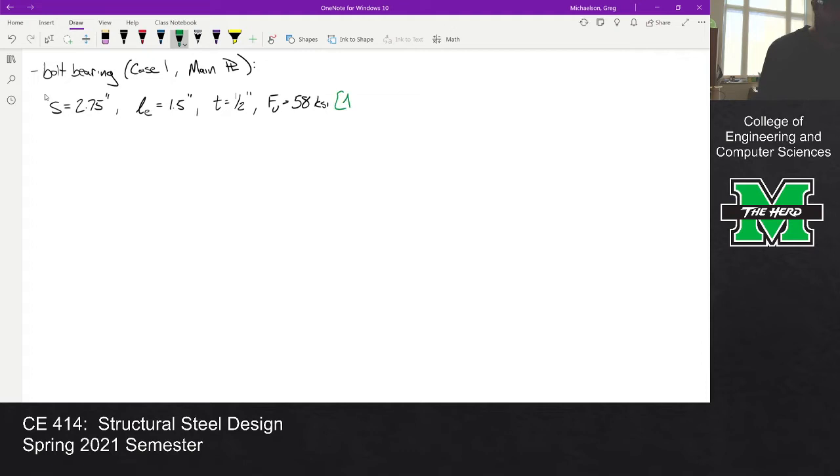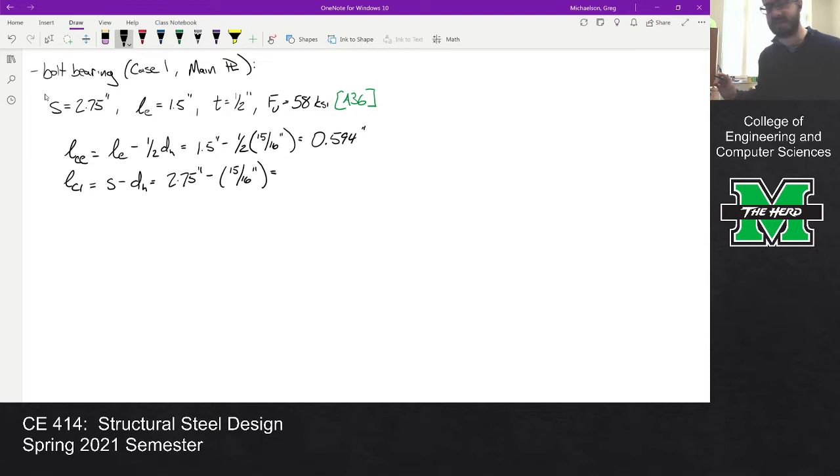The first thing we do is compute our LCE and LCI. So LCE is our edge distance minus half of a hole diameter, which is 1.5 inches minus half of 15/16ths, and that comes out to be 0.594. Then LCI is s minus dh, so that's 2.75 inches minus 15/16ths, which comes out to be 0.938 inches.